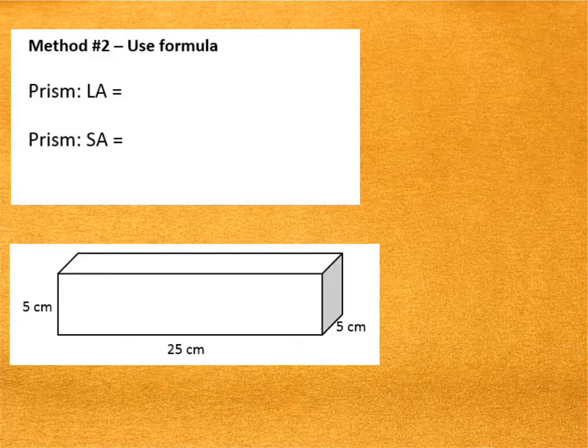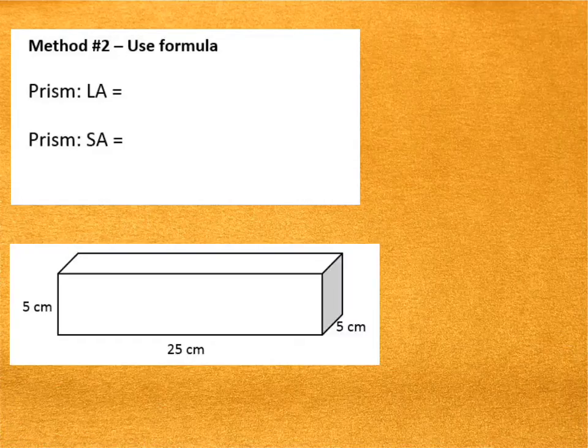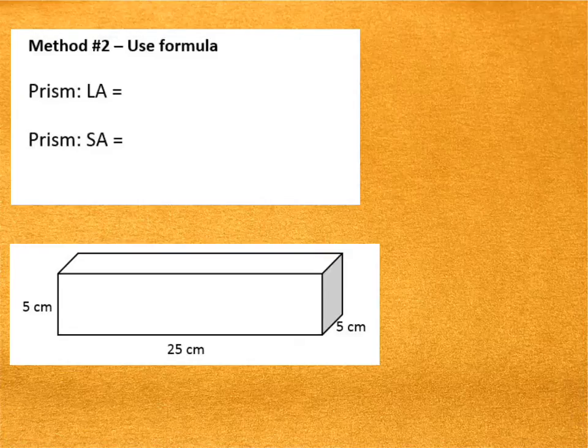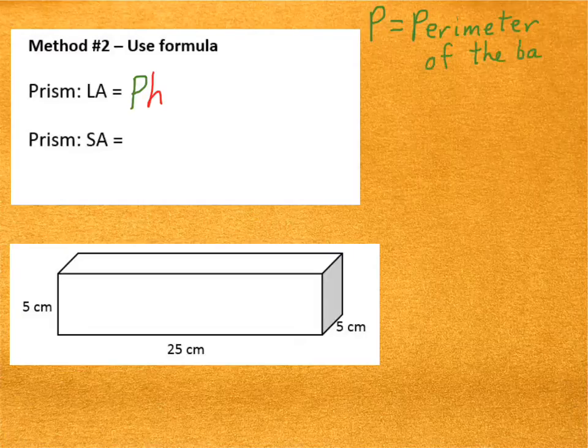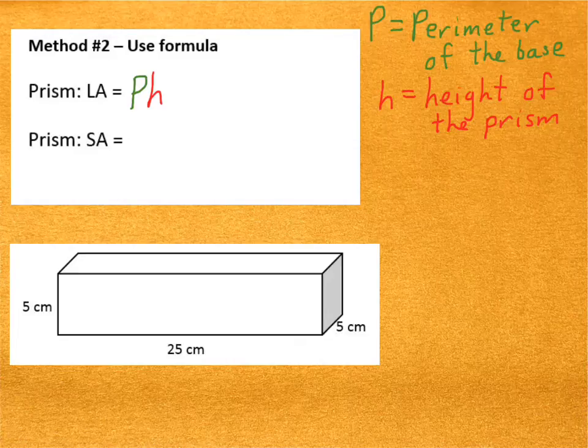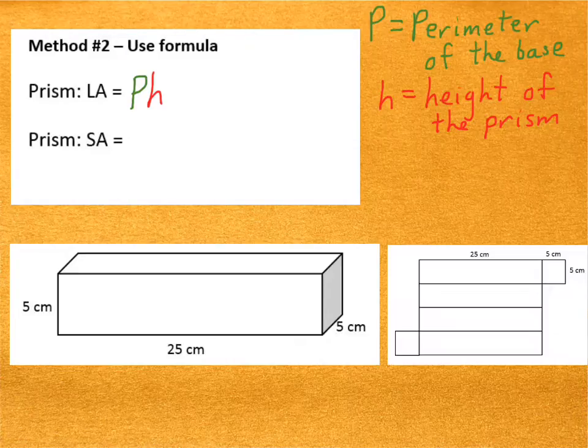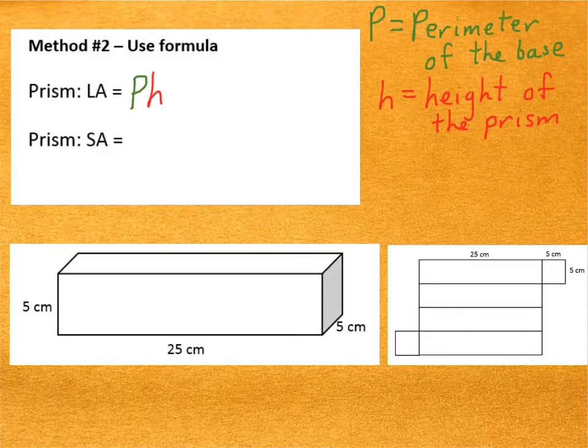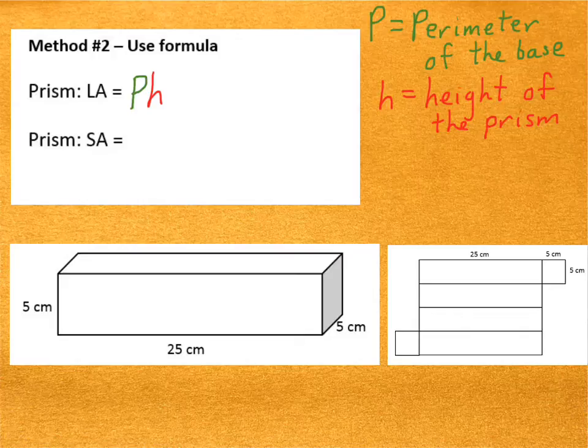The other method is to use a formula. The formula for the lateral area of a prism is PH, where P stands for the perimeter of the base and H stands for the height of the prism. I want to take just a moment and show you where this formula came from. It actually comes from the method that we just did, which is adding the area of all of the faces.